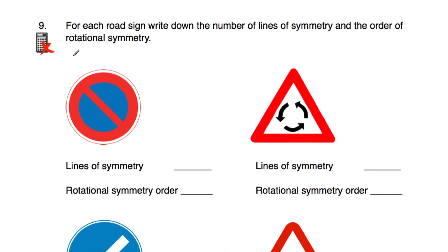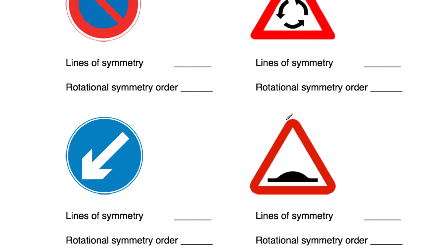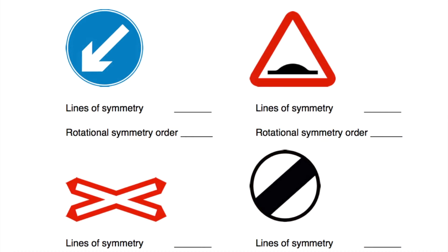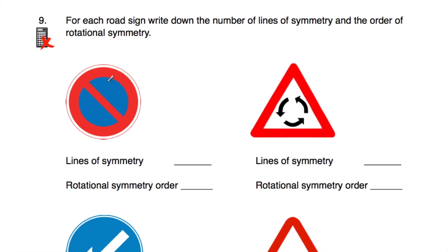Question number 9: we've been given a variety of road signs — the no waiting sign, the roundabout sign, the keep left sign, the humps in the road sign, the level crossing with no barrier sign, and the national speed limit sign. The no waiting sign has two lines of symmetry (both diagonal) and rotational symmetry order 2. The roundabout sign has 0 lines of symmetry, but rotational symmetry order 3.